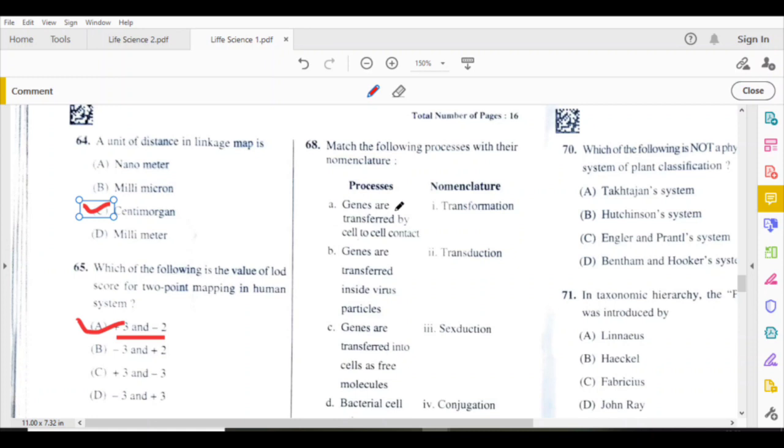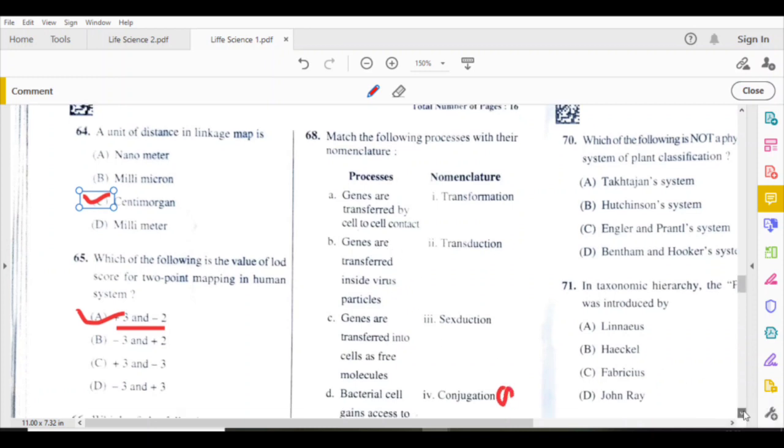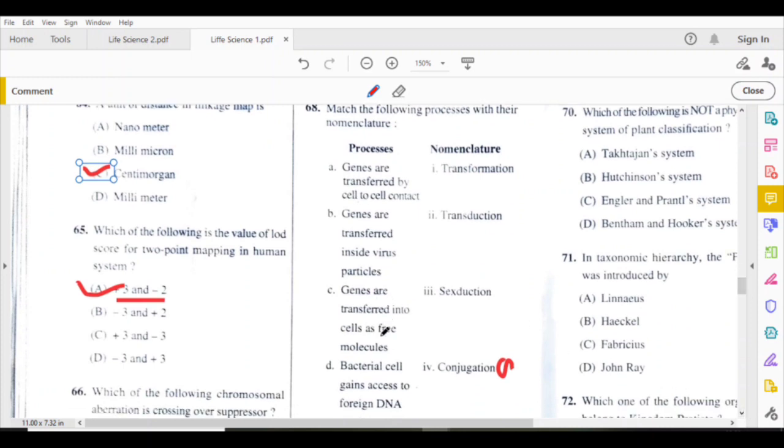68th question: Genes are transferred by cell to cell contact during conjugation. Genes are transferred into cells as free molecules during transformation, C.